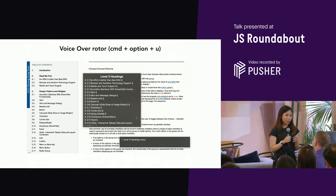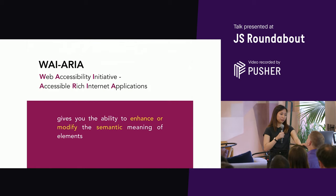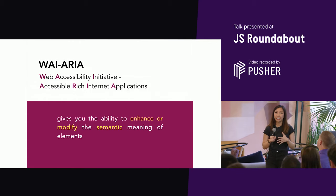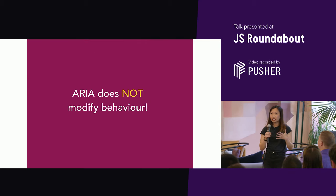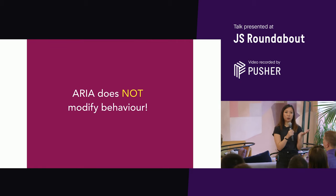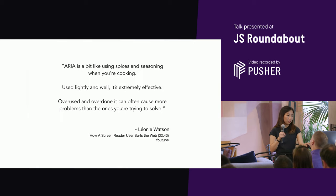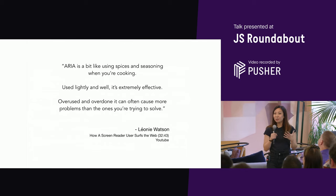We've spoken a lot about semantic HTML and using native elements when you can, but what if you need to build a custom element that doesn't exist as a native element? That's where ARIA comes in. ARIA gives you the ability to enhance or modify the semantic meaning of elements. But one very important thing to remember: ARIA does not modify behavior. All it does is tell the screen reader what to say — it doesn't give you the other functionalities or behaviors of that element.